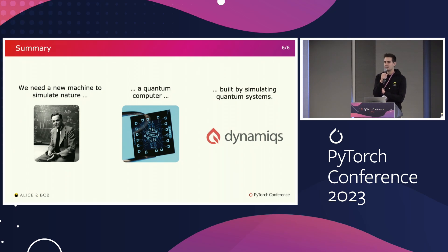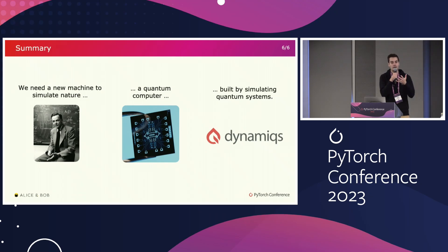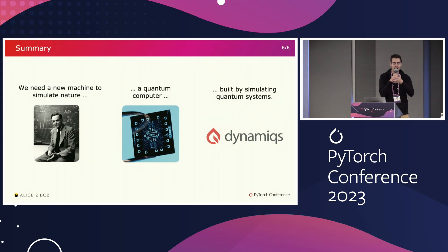The MIT labs did a project called Torch Quantum, which is also open source. What they do is mostly circuit simulation — they take idealized qubits and run circuits, so some gates, on these qubits. What we propose here is really to go lower in the stack and do physical simulations. If you want a higher-level approach, assuming you already have working qubits and simulate circuits on them, we instead go lower and simulate the actual physics of the different qubits.